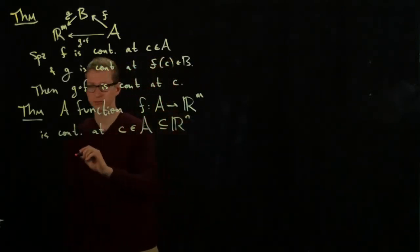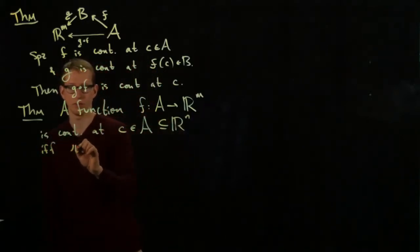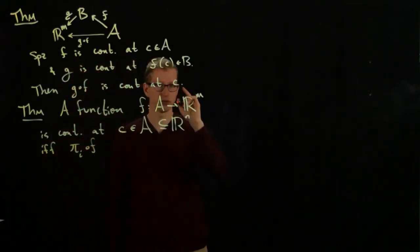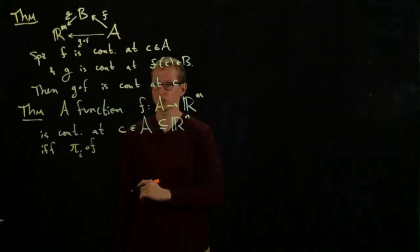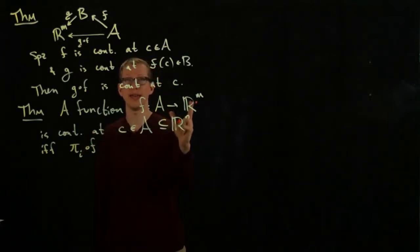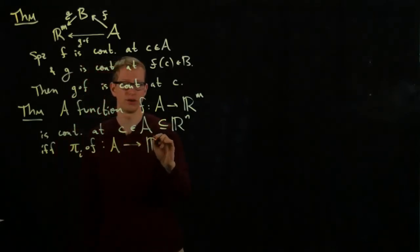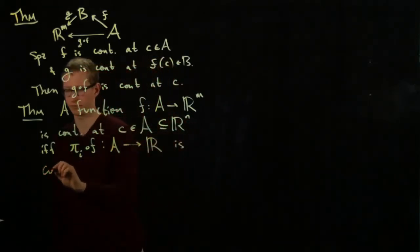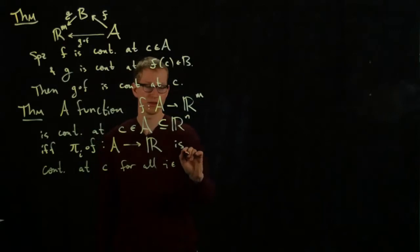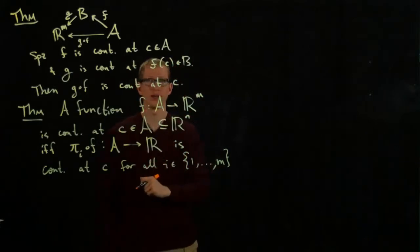And the domain A, just so that we have some things in mind, is a subset of R^M, just to be totally clear, is continuous at C if and only if the component functions pi_I composed with F, which is defined on A, goes to R^M, pi_I is a projection from R^M to R. So this is a function from A to R, is continuous at C for all I going from 1 to M, because there are M projections from R^M to R.